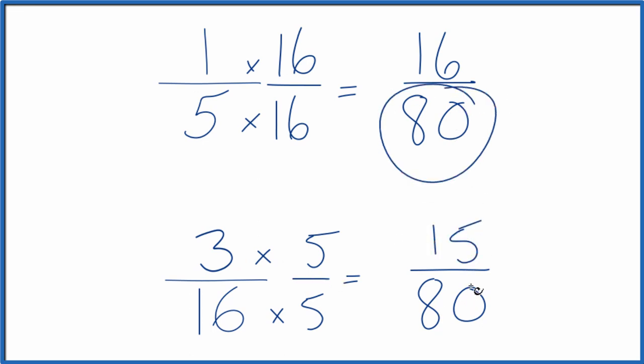Now, since the denominator is the same, we can compare the numerators. When we do that, we see that 16 is greater than 15. So 16 eightieths is greater than 15 eightieths. Not by a lot, but it is greater.